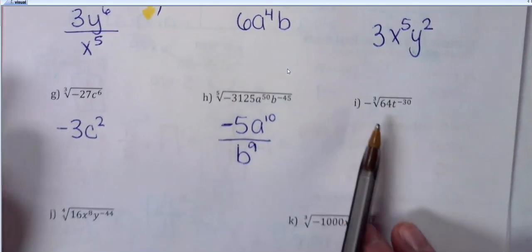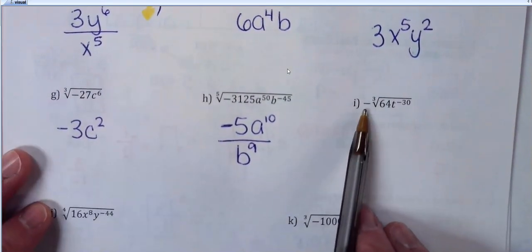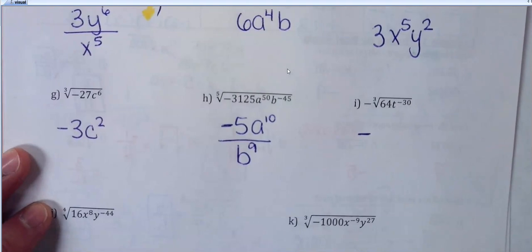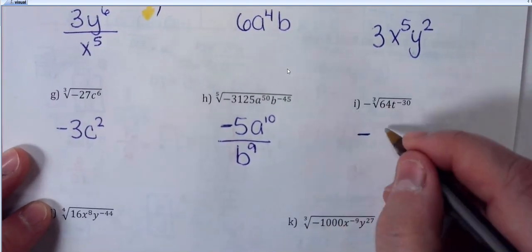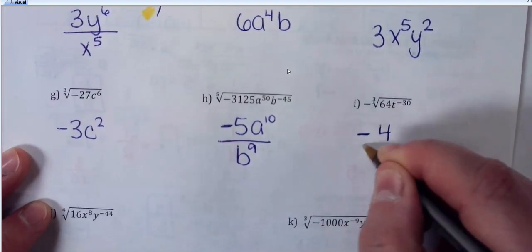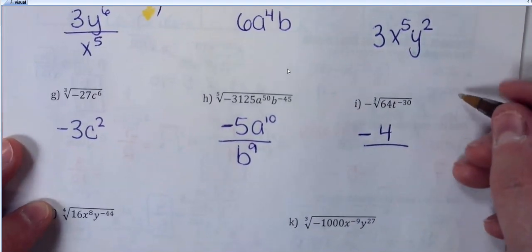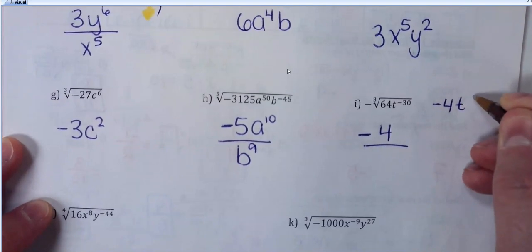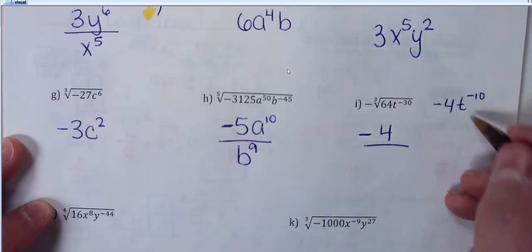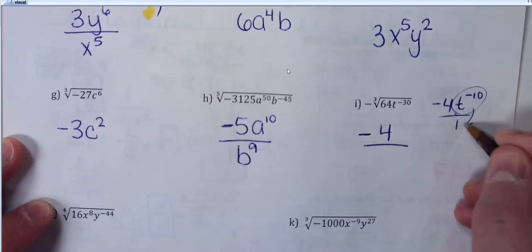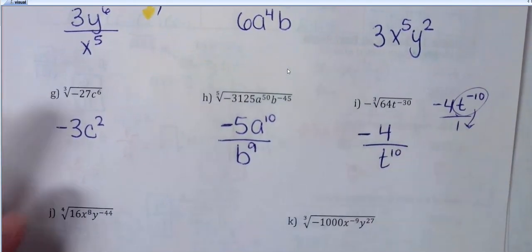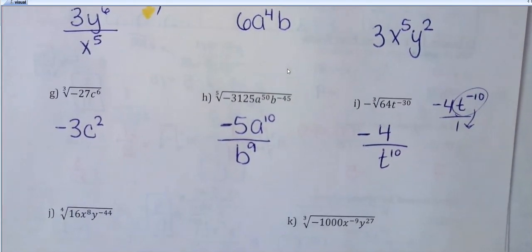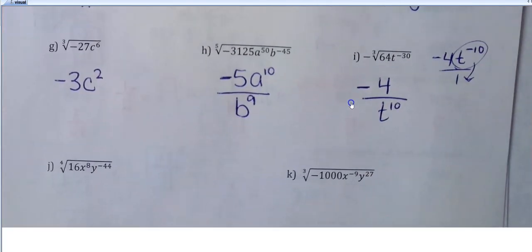This one just has a negative 1 in front of it, so I'm going to have a negative as part of my answer. The cube root of 64 is 4. Because I have a negative exponent, this would be negative 4t to the negative 10th — then move the negative exponent down, so it becomes t to the positive 10th on the bottom. If that makes sense and you want to skip that step, that's totally fine.